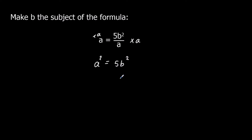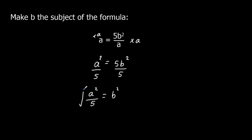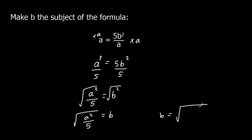I need to get rid of the 5 next. We've got 5 times b squared — to get rid of a times we do a divide, so I divide both sides by 5. So I've got a squared over 5 equals b squared. Now I need to get rid of the square — the opposite of squaring is square rooting — so I square root both sides. B equals the square root of a squared over 5.